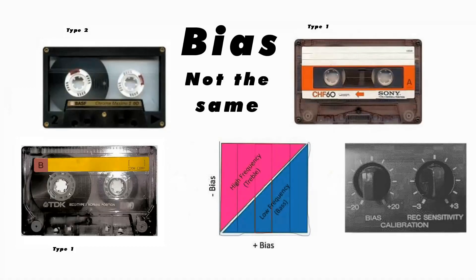Most of the tapes are mostly right most of the time. What you have to do is go and try a different one if you're not happy with what you get. For instance, if you're trying to use a BASF Chrome on a Japanese deck, you may find it's not so good. In which case, get yourself a TDK Chrome and you'll probably find that works better. When I say better, I don't mean the tape itself is better — I just mean the sound will be better, because the tape has to be set for the machine and the machine has to be set for the tape.